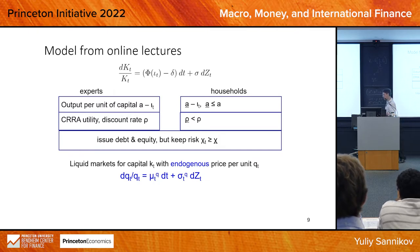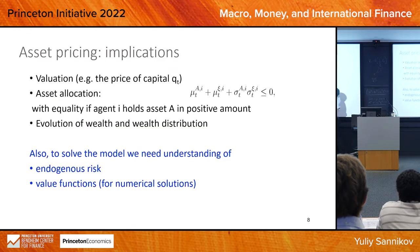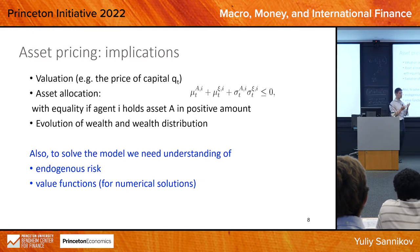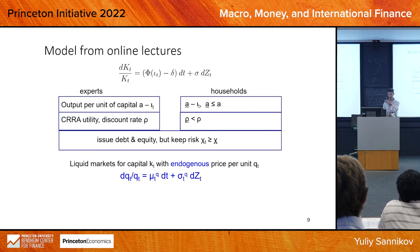Now I want to give the big picture by solving a complete macro model from beginning to end — model number one. After solving it, I'll show model number two and ask you to solve it. Model number one is the model from the online lectures: logarithmic utility, no equity issuance (only debt), so any individual holding capital must fully absorb the risk of that capital.